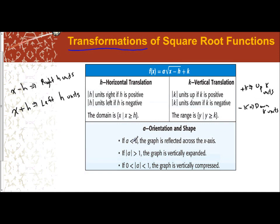Now we look at orientation. If a is less than 0, which means if a is negative, it reflects over the x-axis. If the absolute value of a is greater than 1, which means the size of a, if your coefficient to the radical is a larger number, then it's going to expand vertically, it's going to increase faster. If it's a smaller number between 0 and 1, it's going to slowly increase, it's going to be compressed vertically.